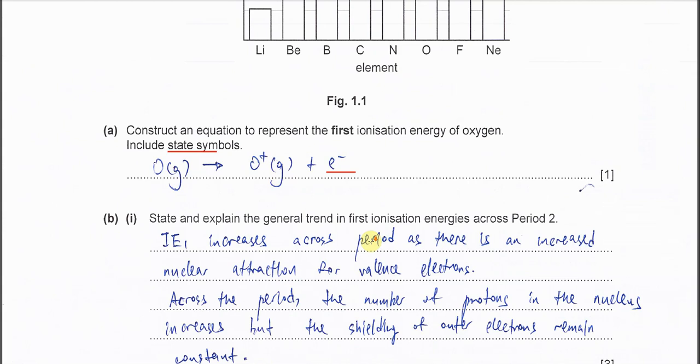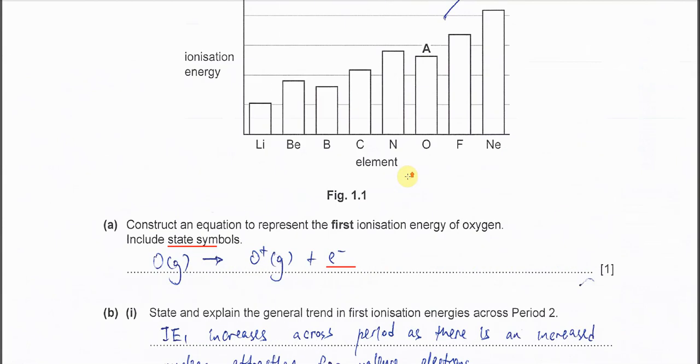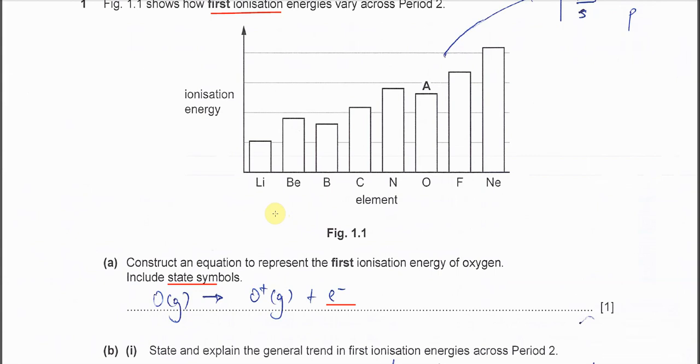Part B: state and explain the general trend in the first ionization energies across period 2. The general trend will be from lithium to neon, so it generally increases. So explain this general trend. Okay, very easy. When it's across period...